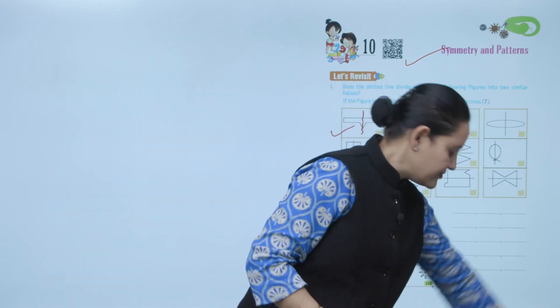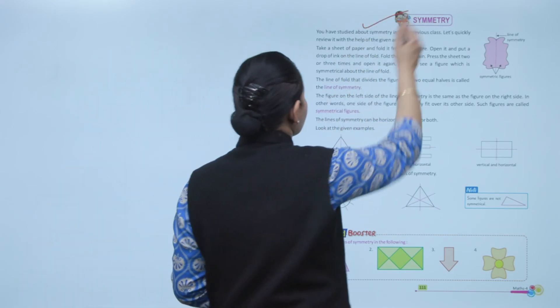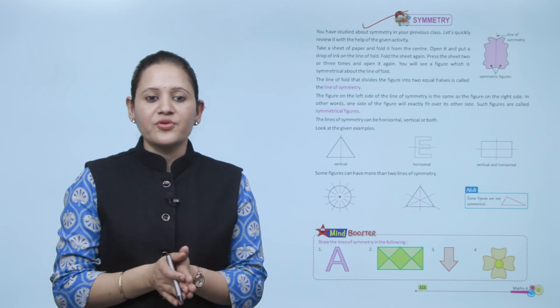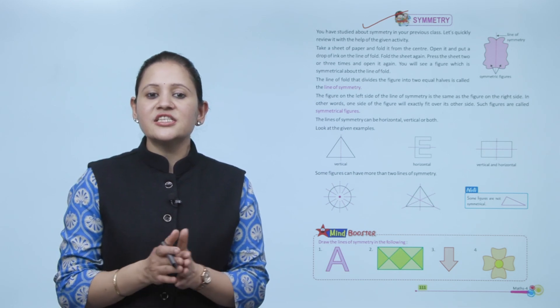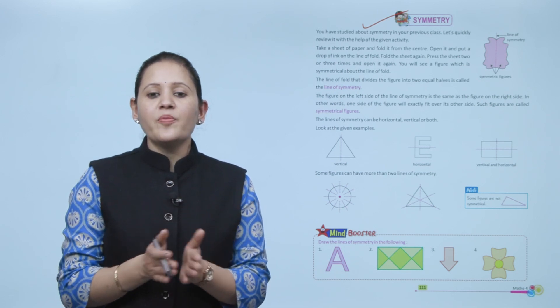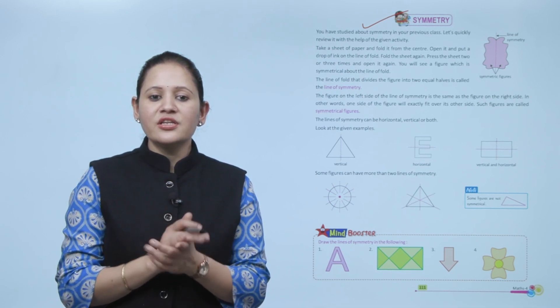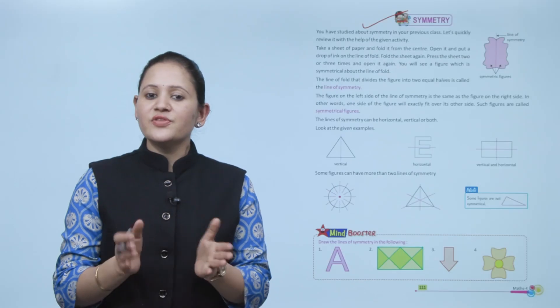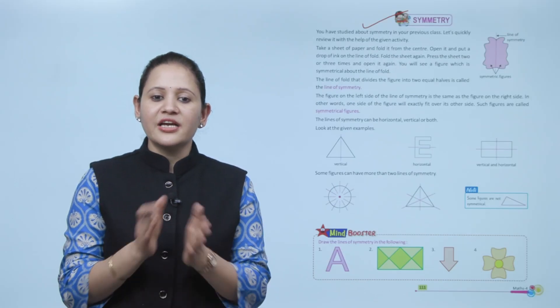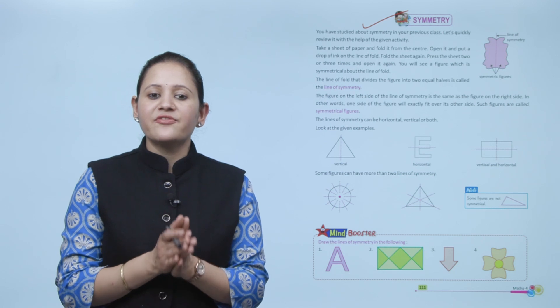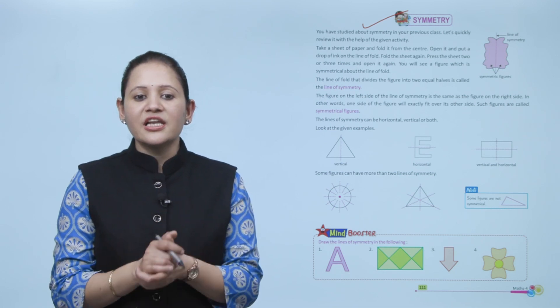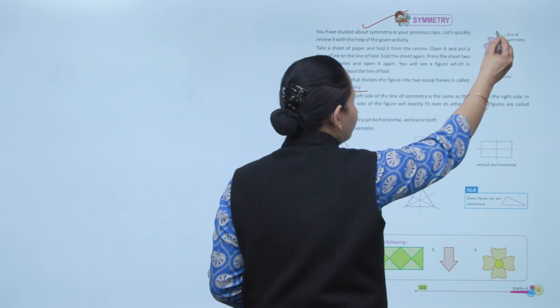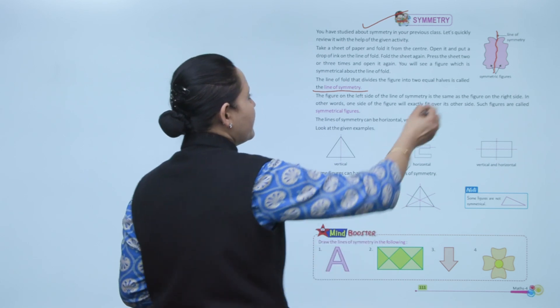Next, symmetry. You have studied about symmetry in your previous class. Let's quickly review it with the help of this activity. Take a sheet of paper and fold it in the center. Open it and put a drop of ink on the line of the fold. Fold the sheet again, press it two or three times, and open it again. We'll take a sheet of paper, fold it along the center, and then put a drop of ink here.